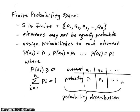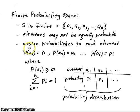Now let's look at general finite probability spaces. Again, S our sample space is finite, and we'll say it has elements A1 through AN. The elements in this sample space, though, may not be equally likely. So we don't know starting off what the probability is of each element — we have to figure that out from what's given in the problem. We assign probabilities to each element: the probability of A1 is P1, probability of A2 is P2, and so on. For general A sub i, we have probability P sub i.